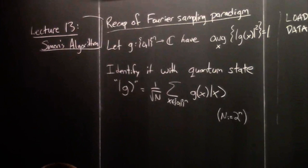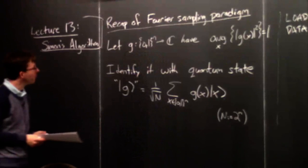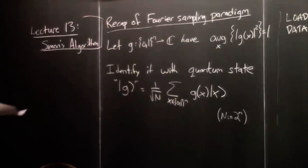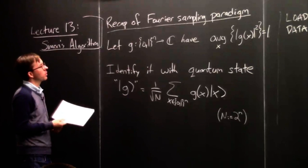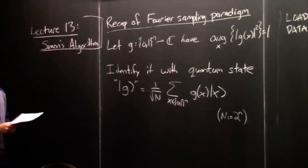Shor's factoring algorithm is almost just like Simon's algorithm with a slightly different Fourier transform. So let's recap what we talked about in the last two lectures, which is a kind of paradigm for quantum computing called the Fourier sampling paradigm.